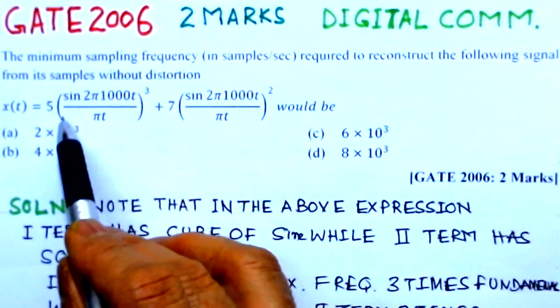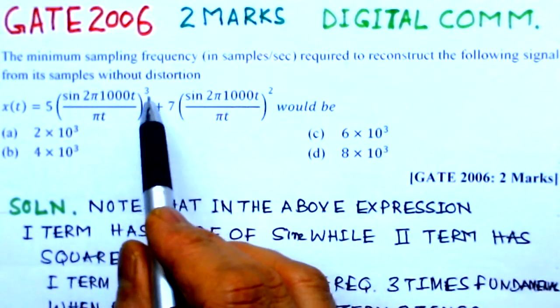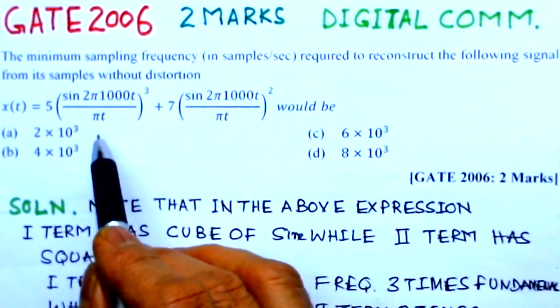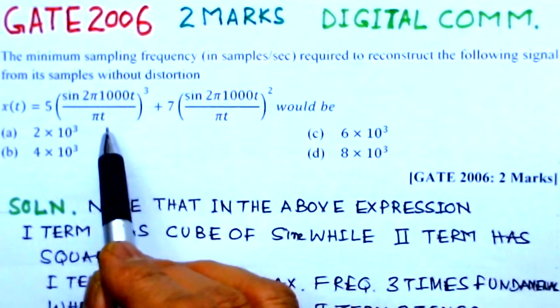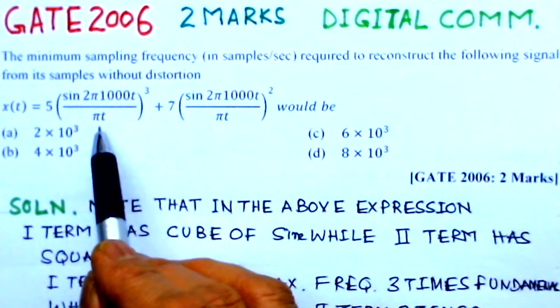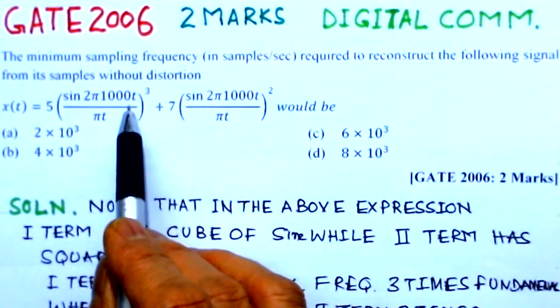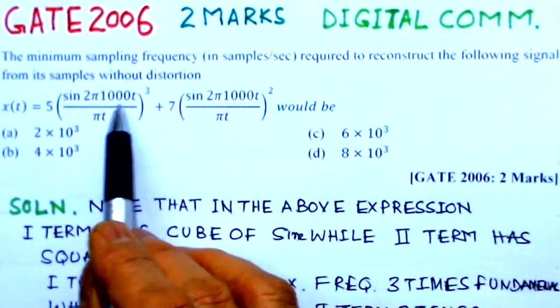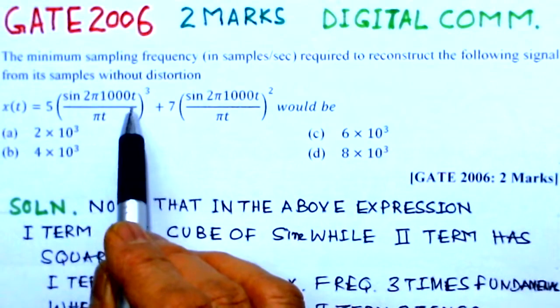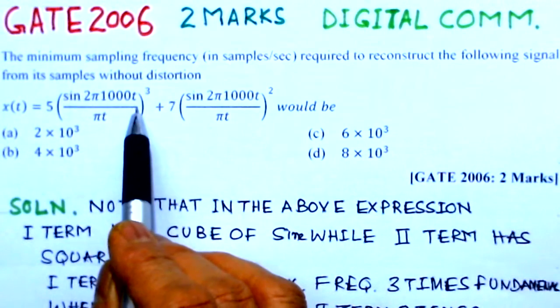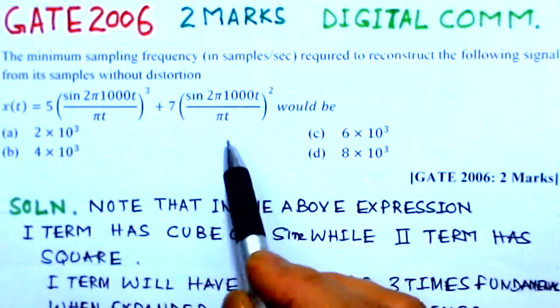So if you expand this cube, sin³, you will find it will contain the frequency components up to three times this frequency. This frequency is 1000 hertz, so it will have frequency components up to 3000. 2000 also, 1000 the fundamental would be there.